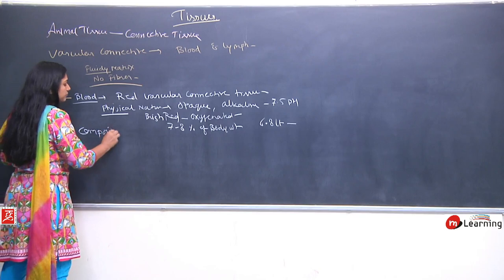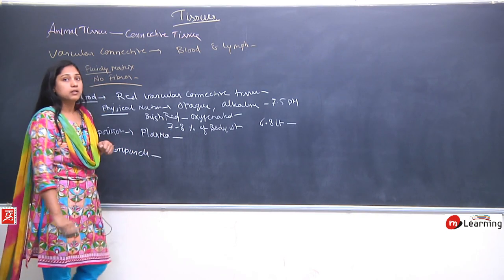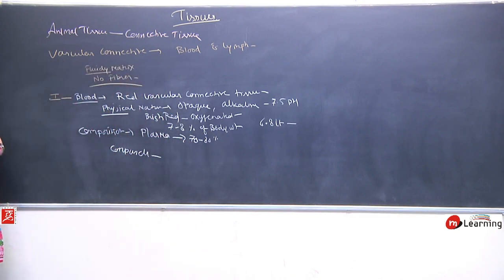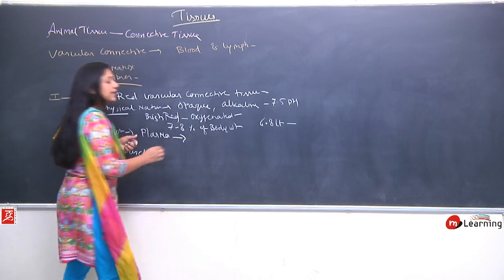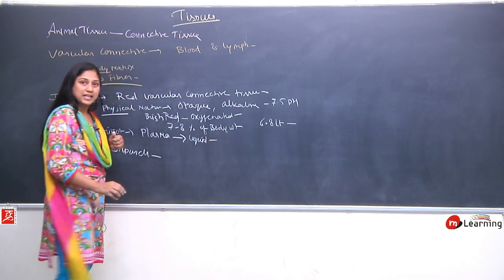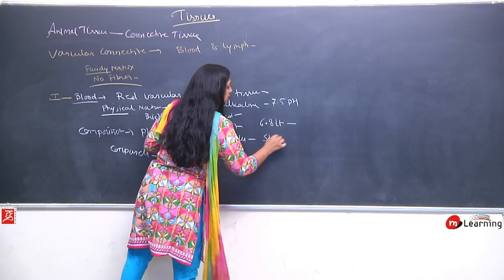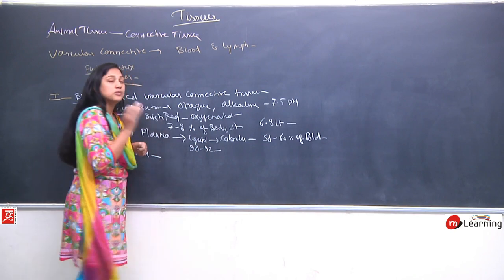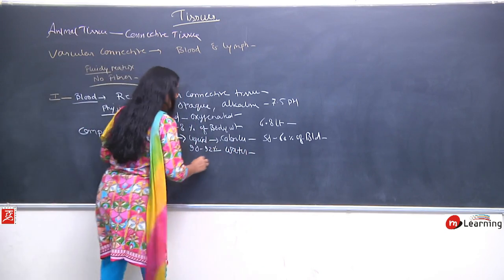Blood is composed of plasma and corpuscles. Plasma makes up about 50 to 60 percent of blood. Plasma is a colorless fluid which forms the base of blood. Plasma itself is around 90 to 92 percent water, and the rest is formed by proteins.